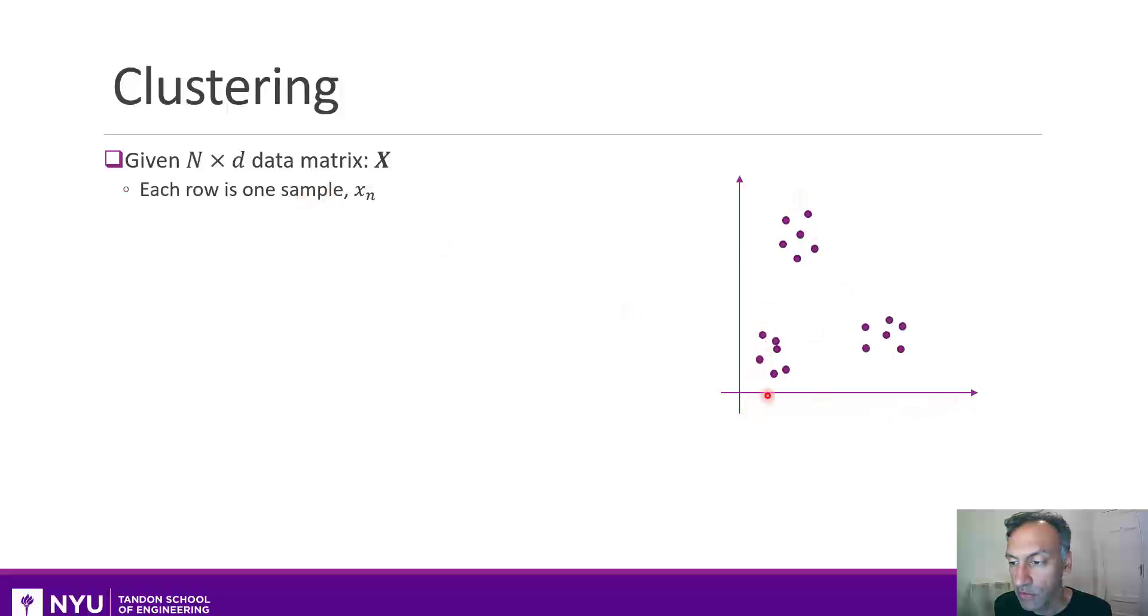In this case here, if the dimension was 2, our data points could look like this. Now, what we want to do is try to find clusters of these points. So visually, in this case, there's kind of three natural clusters: this purple cluster on the top, and then a green and blue cluster on the bottom.